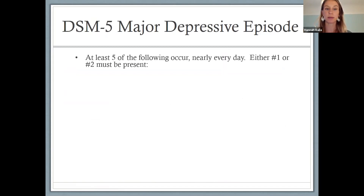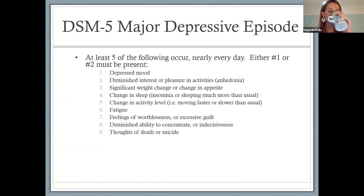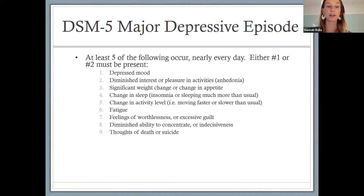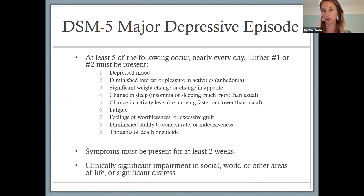DSM diagnoses might sound like this. This is the DSM description for a major depressive episode. You need at least five of the following nine symptoms, and you must have depressed mood or loss of interest and pleasure. The fact that you need five out of nine speaks to the variability of what depression can look like — some people might have one through five, others might have one and then six through nine, a different set of symptoms even though it's classified as the same disorder. Symptoms must be present for at least two weeks and must be interfering with getting things done or cause really significant distress.